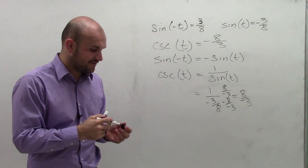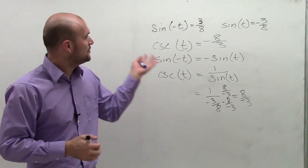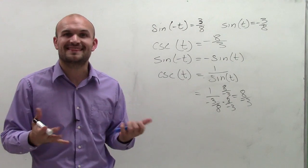So there you go, ladies and gentlemen, that's how you find the cosecant of t when given sine of negative t equals 3/8. Thanks.